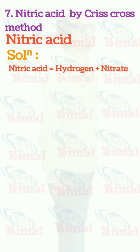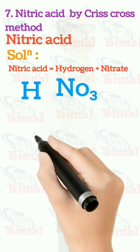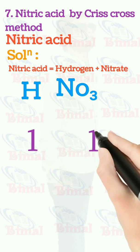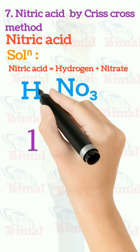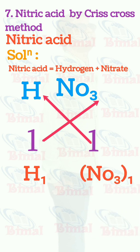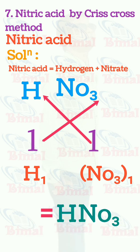Molecular formula of nitric acid by criss-cross method. Nitric acid is equal to hydrogen plus nitrate. Symbol for hydrogen is H, symbol for nitrate is NO3. Valency of hydrogen is 1, valency of nitrate is 1. When criss-cross is done, the valency is exchanged and we write H1 NO3(1), which is equal to HNO3. Here, 1 is not written, so we simply write HNO3, which is the molecular formula for nitric acid.